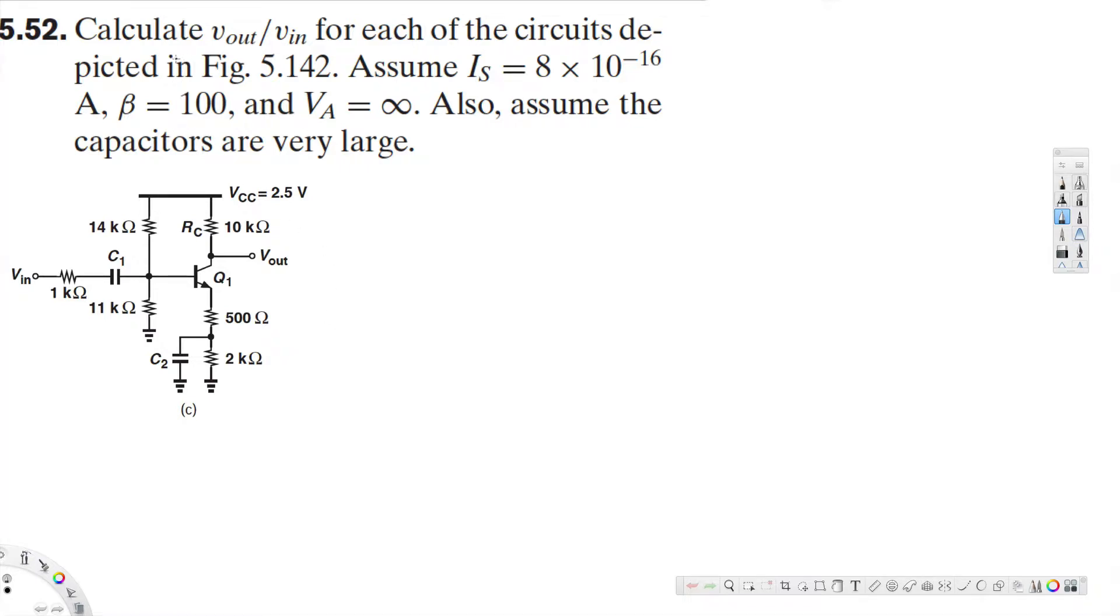What's going on guys, let's look at this problem right here. The question is asking calculate v_out over v_in for each of the circuits depicted in figure 5.142. Assume I_S is equal to 8 times 10 to the power minus 16 ampere, beta is equal to 100, and V_A is equal to infinity. Also assume the capacitors are very large.